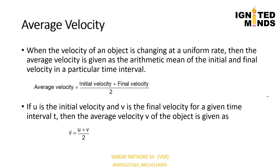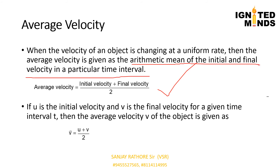Average velocity: when the velocity of an object changes with time, we calculate average velocity. Average velocity = (initial velocity + final velocity) ÷ 2. It is the arithmetic mean of the initial and final velocity over a particular time interval.